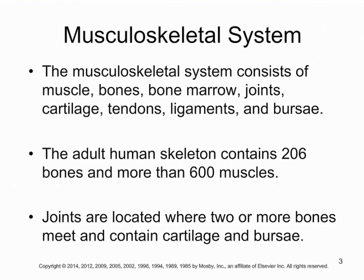In terms of the components of the muscular skeletal system, you have your muscles and your bones, but it also includes bone marrow, joints, cartilage, tendons, ligaments, and bursa — pretty much everything that combines bones and muscles together and allows you to move. An adult has 206 bones and over 600 muscles. A joint is anywhere two bones meet, and between those two bones you have cartilage and bursa — for example, your knee joint, shoulder joint, or elbow joint.